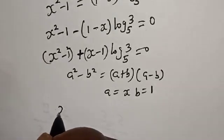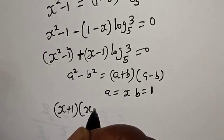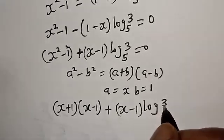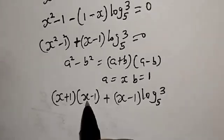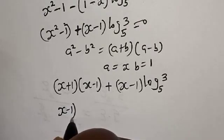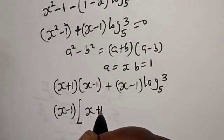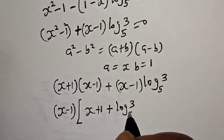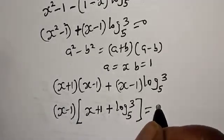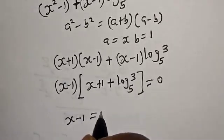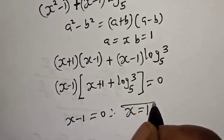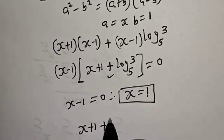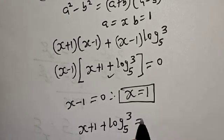So this becomes s plus 1 multiplied by s minus 1 plus s minus 1 times log 3 base 5. Then s minus 1 is common here. Let's bring it out. We have s minus 1 times s plus 1 plus log 3 base 5 is equal to 0. There are two cases here. Case one: s minus 1 equals 0, therefore s equals 1.